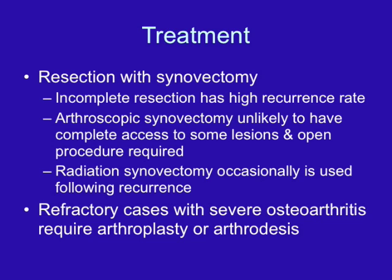Treatment options include resection of the mass with synovectomy, aiming to remove the entire synovium, since incomplete removal results in a high recurrence rate of PVNS. Arthroscopic approaches may not provide complete access, in which case an open procedure is preferred. If recurrence occurs after synovectomy, radiation therapy is an option. In refractory cases or cases with severe secondary osteoarthritic change, arthroplasty or arthrodesis may be performed.